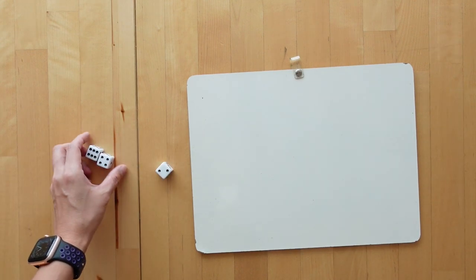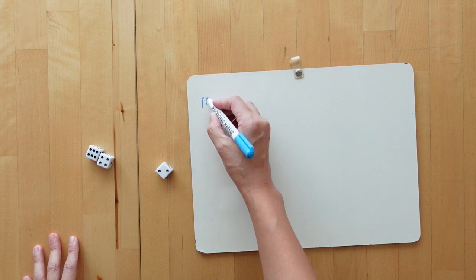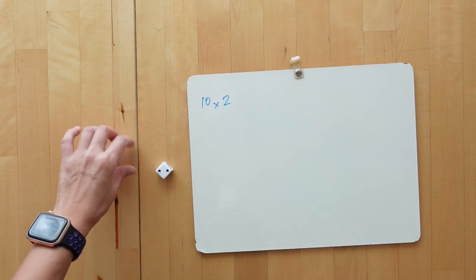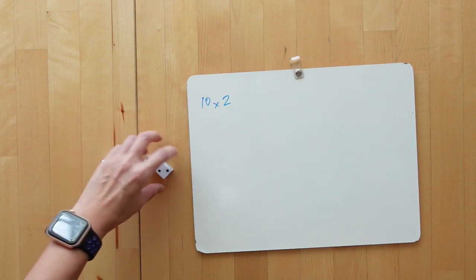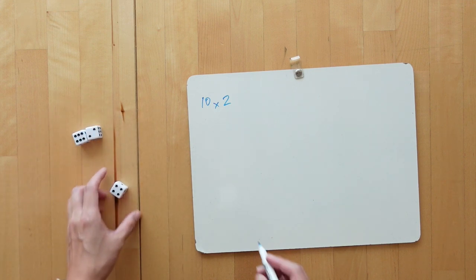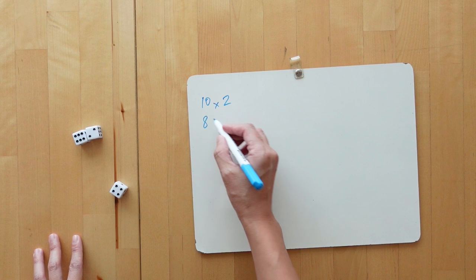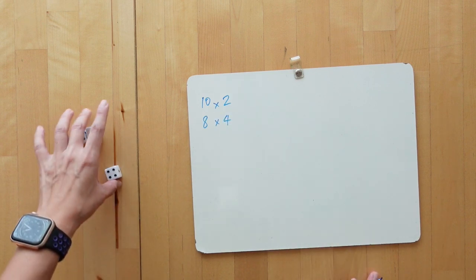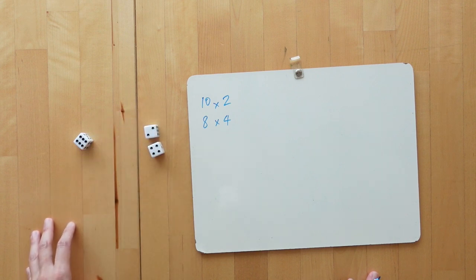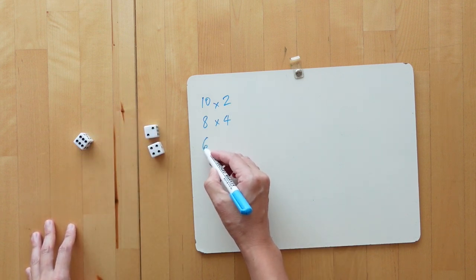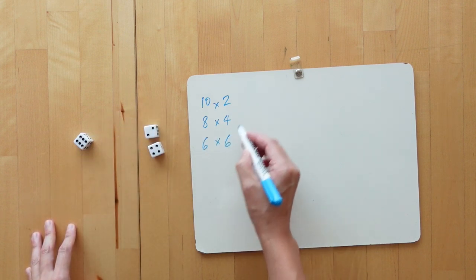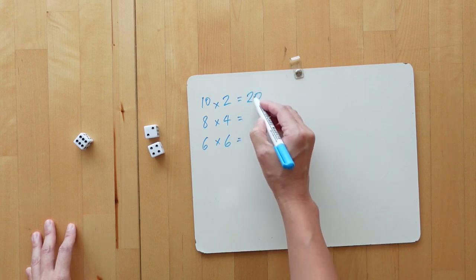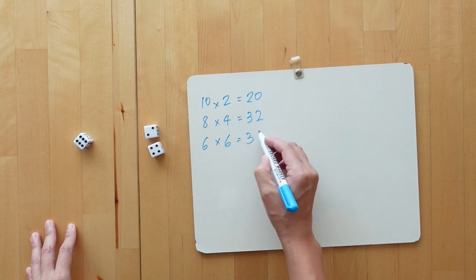We could add six and four to get ten and multiply that by two. We could have six add two to get eight and multiply that by four. Or, we could have four and two to get six and multiply that by six. So, we would get twenty, thirty-two or thirty-six.